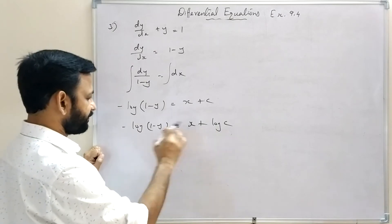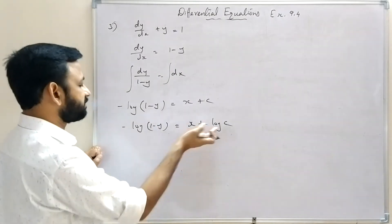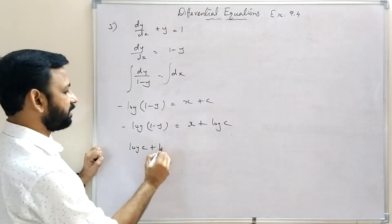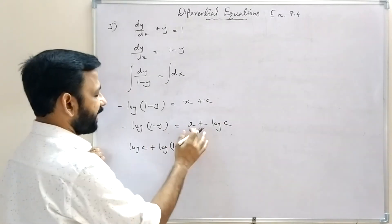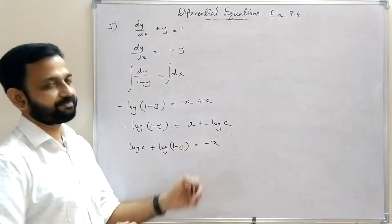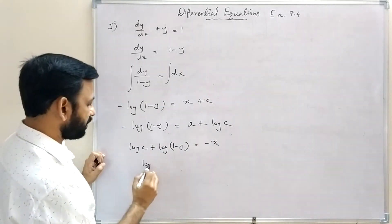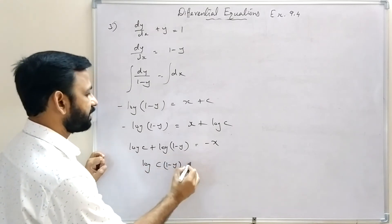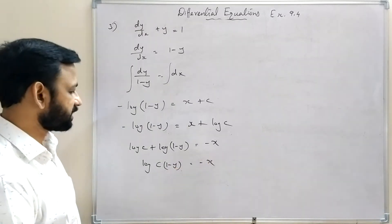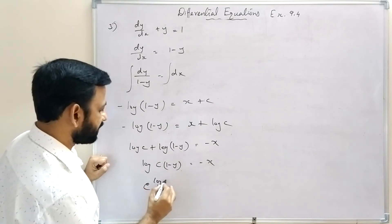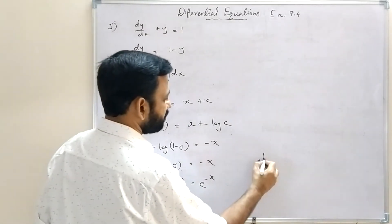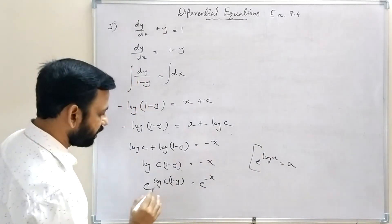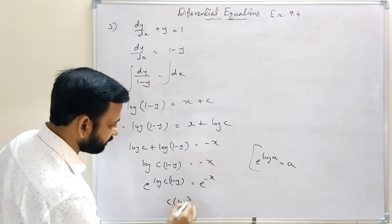Rearranging: log c + log|1 - y| = -x, so log[c(1 - y)] = -x. Taking exponential both sides: c(1 - y) = e^(-x). Therefore 1 - y = e^(-x)/c.